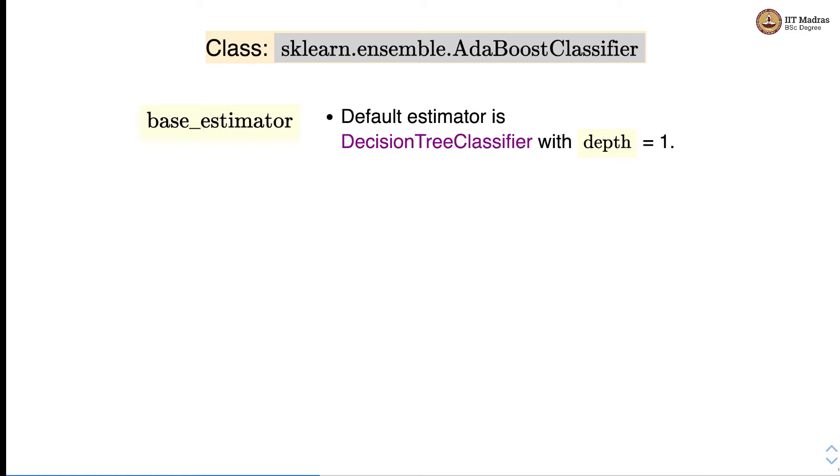The default estimator is decision tree classifier with depth equal to 1. Then there is a parameter called n_estimators that provides the maximum number of estimators where boosting is terminated. The default value is 50.